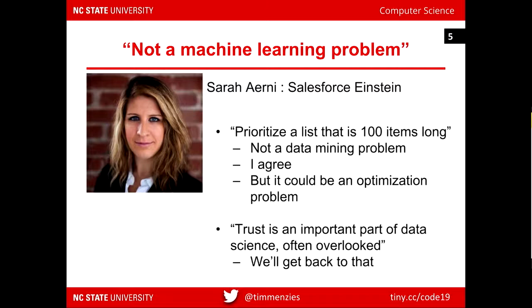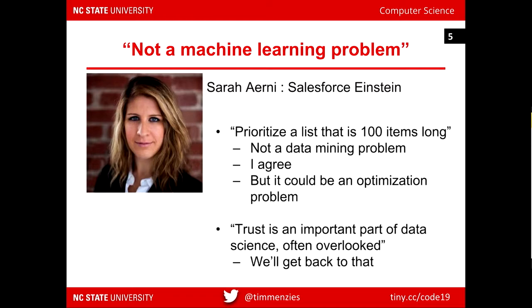Data miners typically have a hardwired success criteria. Decision tree learners minimize entropy; linear regression devices reduce error. We have methods for turning those hardwired goals into other things — cost-sensitive learning — but that's micro-changes. I want a framework where I can put user goals into the learner from day one, and the whole process is controlled by user goals. Prioritizing a list 100 lines long is a perfect optimization and configuration problem. I want to talk about ways we can move data miners into optimizers to configure 100 choices.